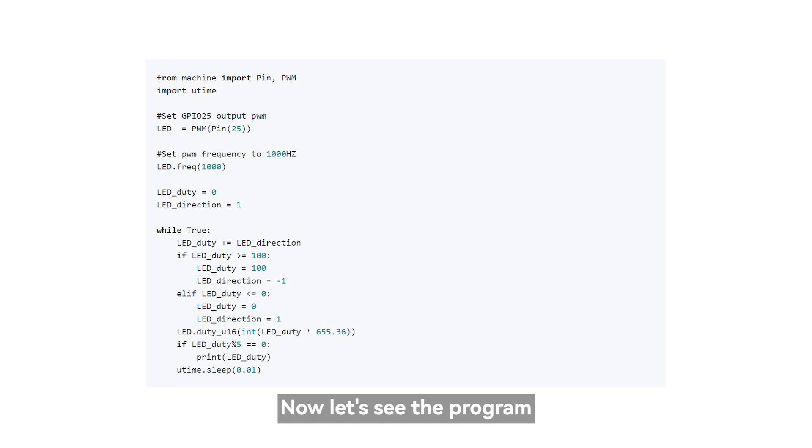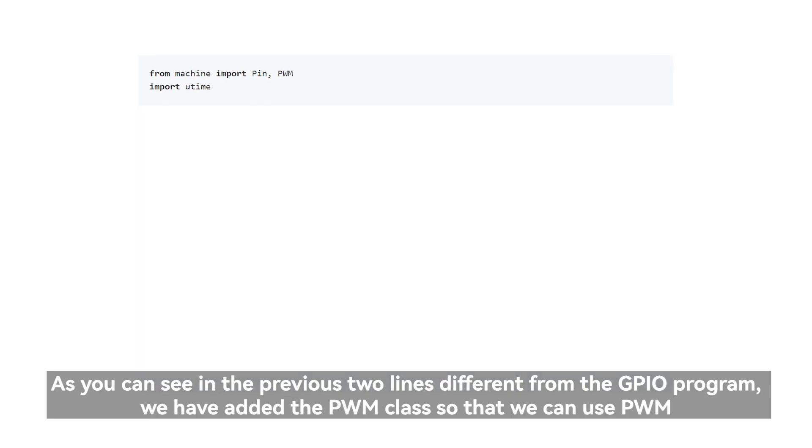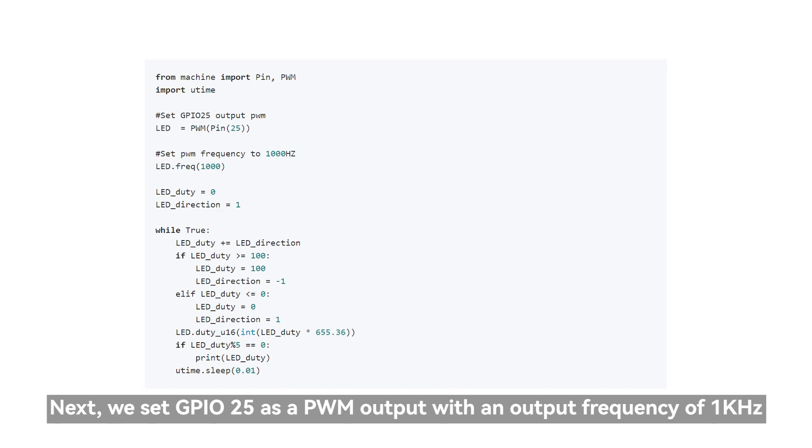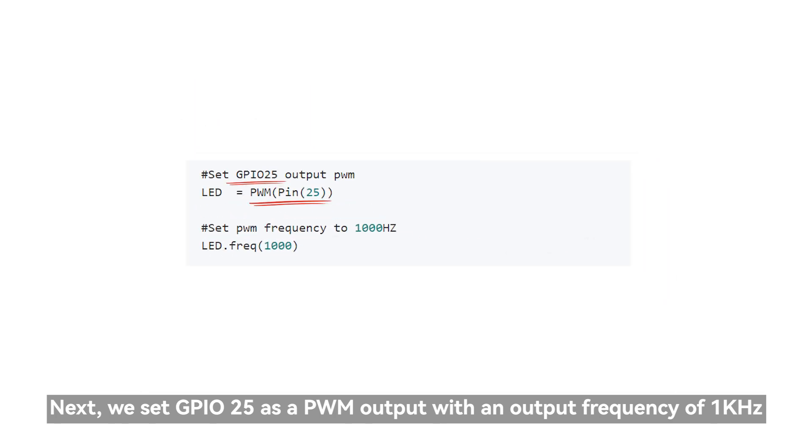Back to our favorite part, programming. Now let's see the program. As you can see in the previous two lines different from the GPIO program, we have added the PWM class so that we can use PWM. Next, we set GPIO25 as a PWM output with an output frequency of 1 kilohertz.